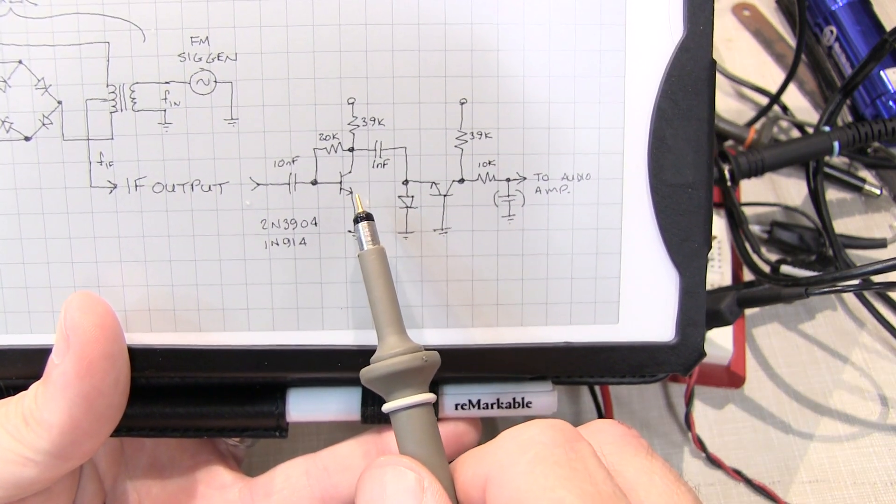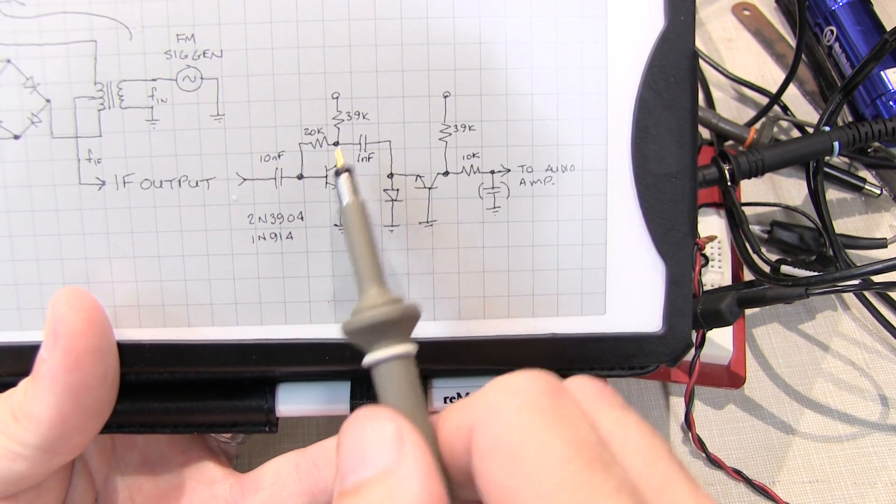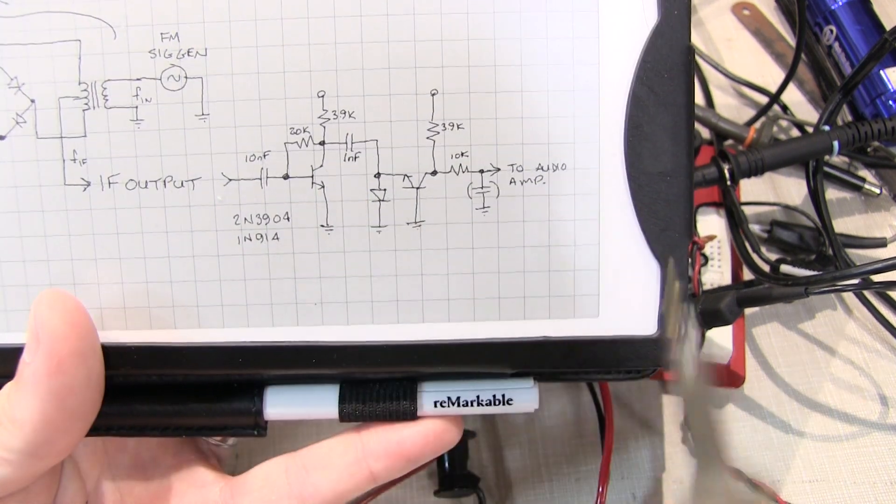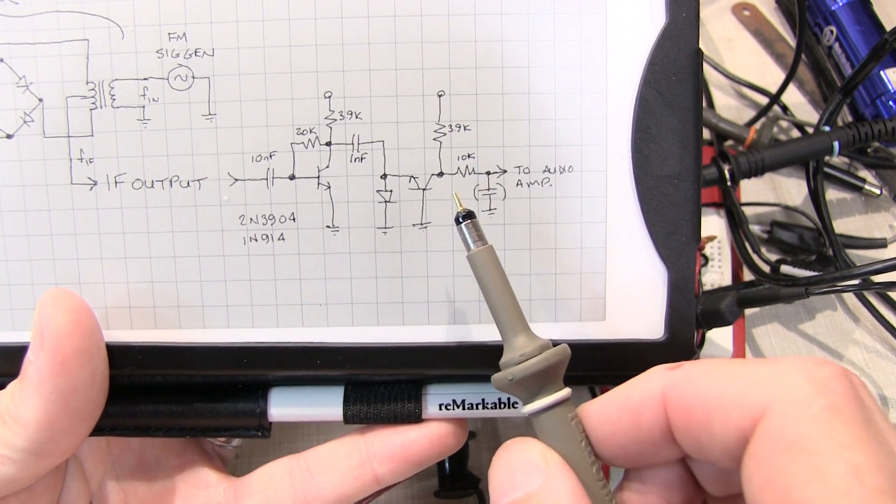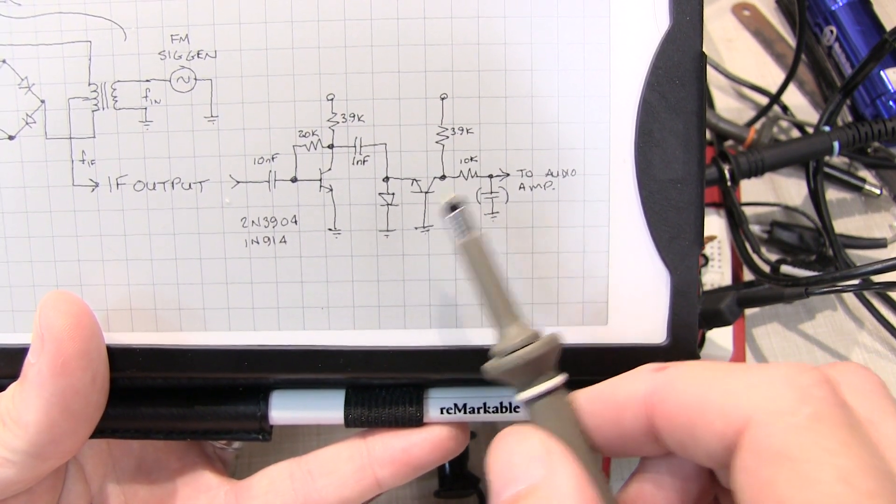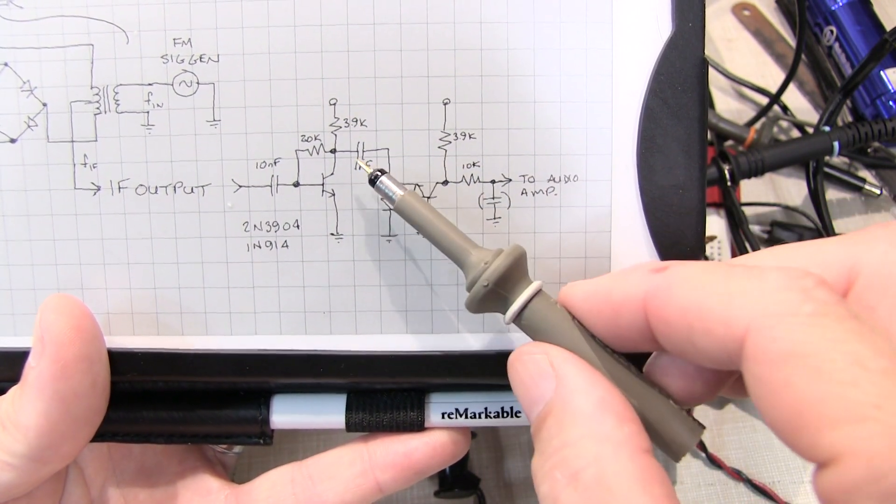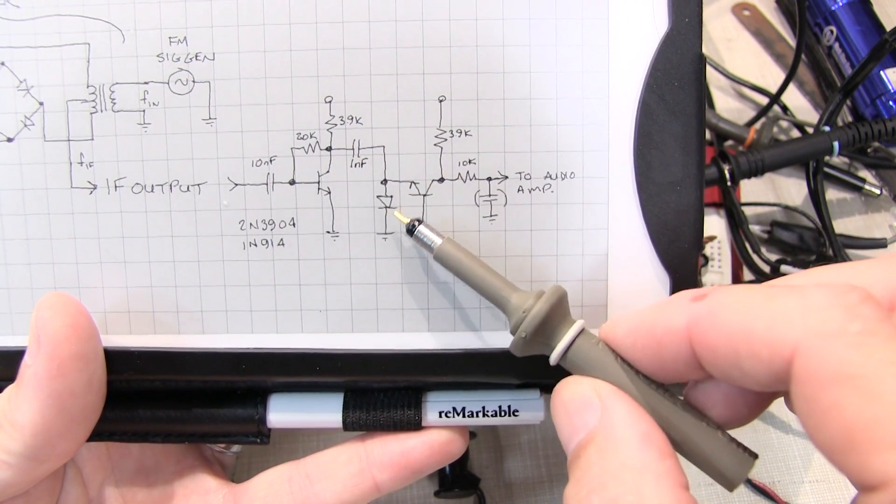In a real receiver you'd have much more gain to go into a limiter. So that's just a very simple AC coupled common emitter amplifier. The output of that goes into this very simple monostable pulse generator.